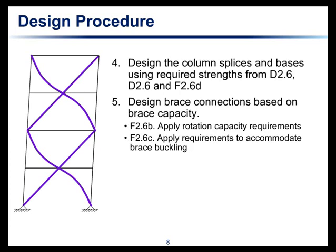We would then proceed to the design of the brace connections. The required strengths of the brace connections are based on the capacity of the brace — we're not using analyzed forces or load combinations, we're just taking the brace force and designing those connections based on its capacity. Similarly, the design of column bases and splices has required strengths that come from Chapter D, specifically D2.6, and F2.6, which has specific requirements for special concentrically braced frames.